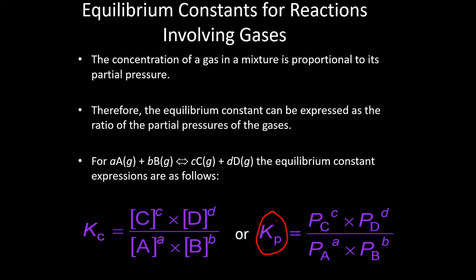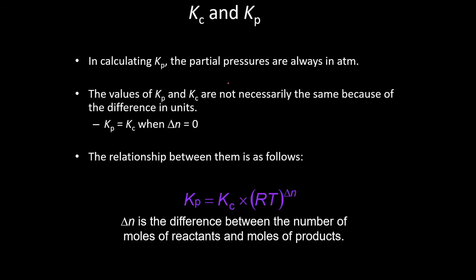Now in some situations, Kp and Kc are equal to each other. So these two will be the exact same thing for a chemical reaction if there's no change in the number of gas molecules from one side of the reaction to the other. So if, for example, we have some chemical reaction, and there's two moles of gas on the one side, and there's two moles of gas on the other side, then Kp and Kc will be exactly the same thing.